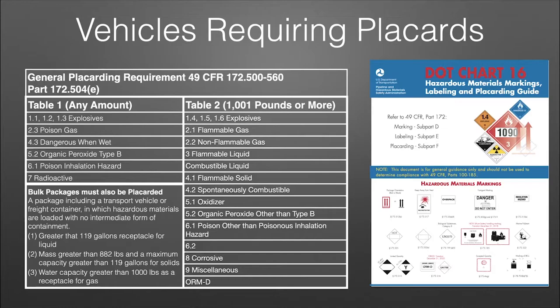First, the DOT 16 chart — these are available at phmsa.dot.gov, the federal hazardous materials site. You can download a PDF copy of this placarding chart, which includes placards, labels, markings, and all those requirements. On the back it has the tables, which you can also find in the general placarding requirements of 49 CFR 172.500 through 560. The table commodities are specifically in 172.504, paragraph E — and that's where we get Table 1 and Table 2.